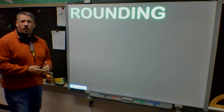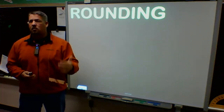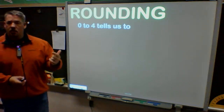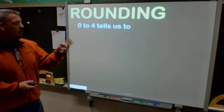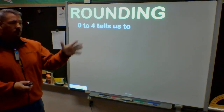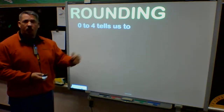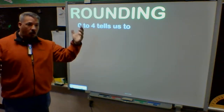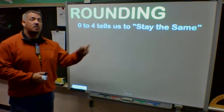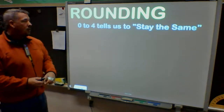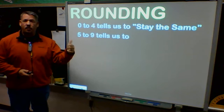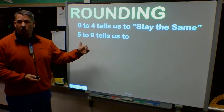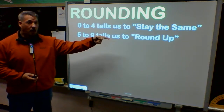When we talk about rounding, there are two different processes. The first one: if the number is from zero to four — that includes zero, one, two, three, and four — then it tells me to leave it the same. The second one is from five to nine — five, six, seven, eight, and nine — those five numbers tell me to round up.